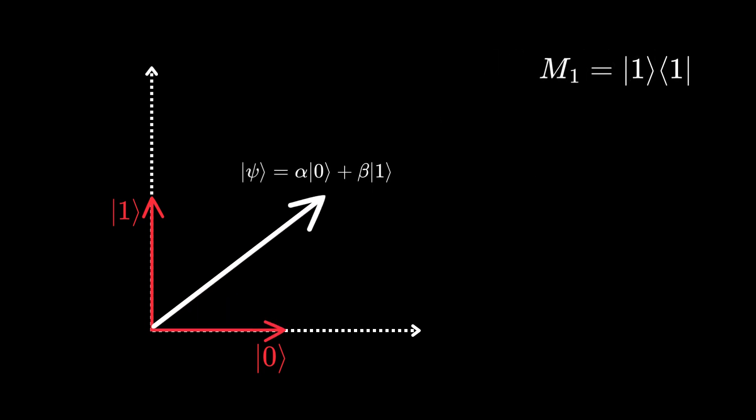A similar scenario happens with projection onto the vertical line. The probability of observing one is the magnitude of beta squared. The state of the system after measurement becomes the projected state, which is beta 1 divided by the norm of beta.